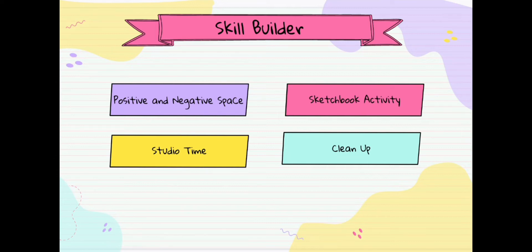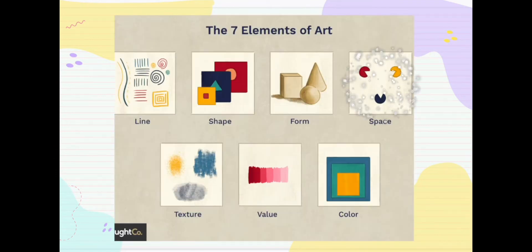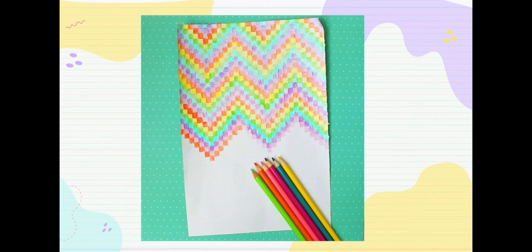Let's get to positive and negative space. First off, space is one of the seven elements of art. Space is the area that an artwork takes up. So if your art is on a sheet of 9 by 12 paper, the area of the paper is the space of your art.